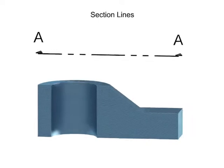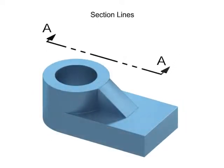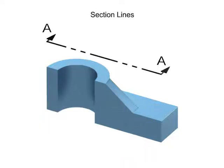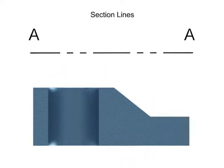There are a number of different types of sectional views that can be drawn. This is a full section view, generated when the cutting plane passes through the entire part.